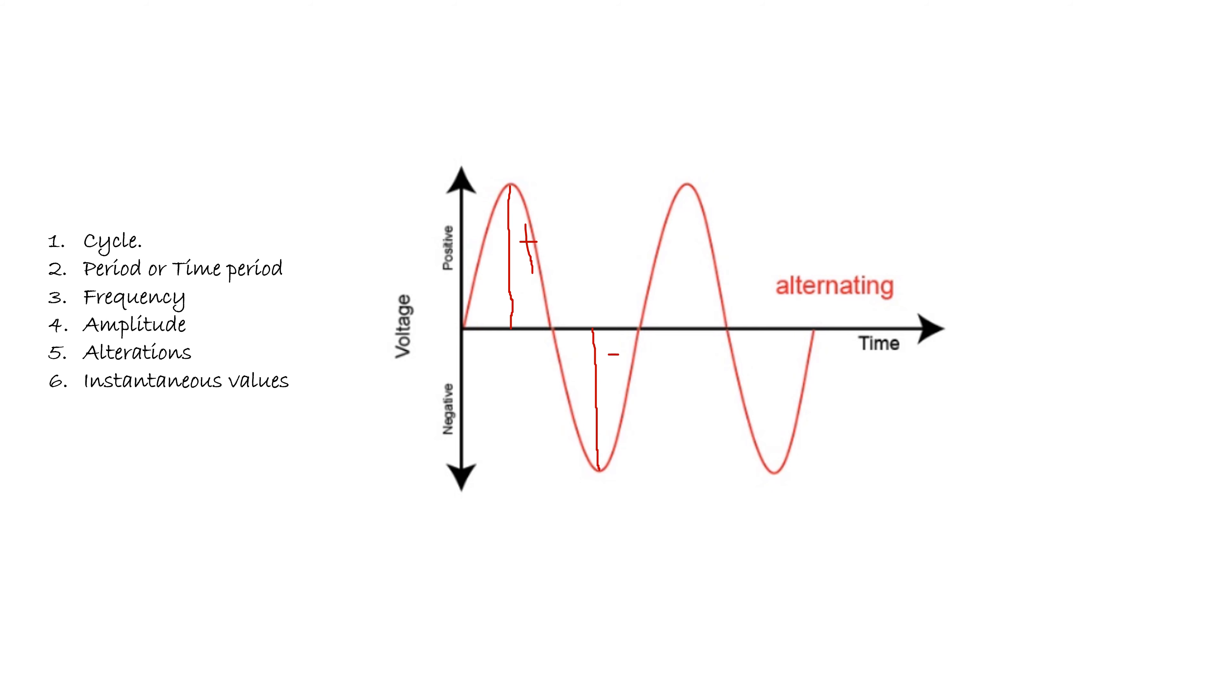The other term is instantaneous value. This is very easy to understand. Let us assume one second on the time axis at this point. You need to project an imaginary line onto the curve like this. It will intersect the curve at one point, and from that point you project one more line onto the y-axis.